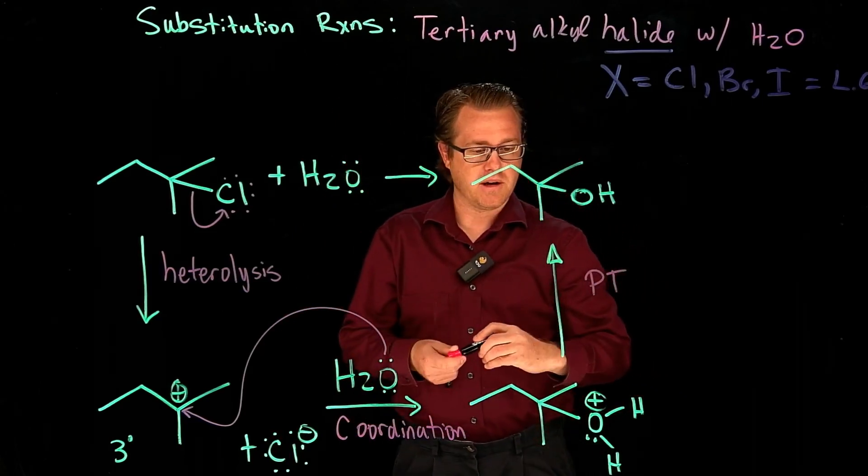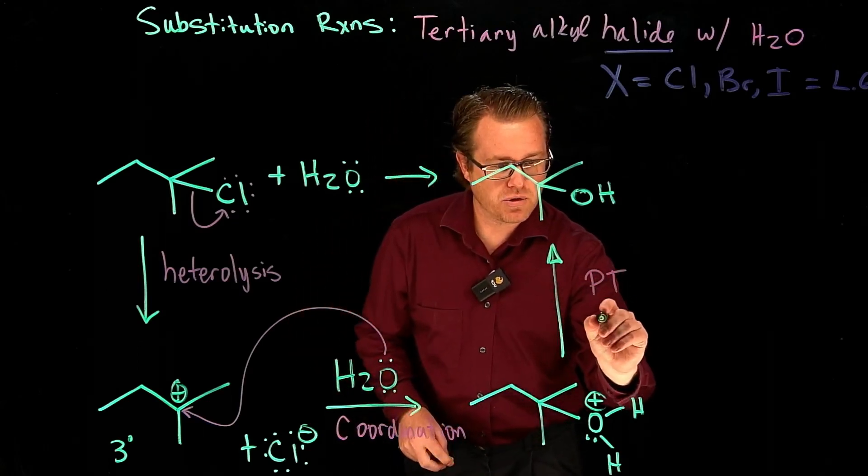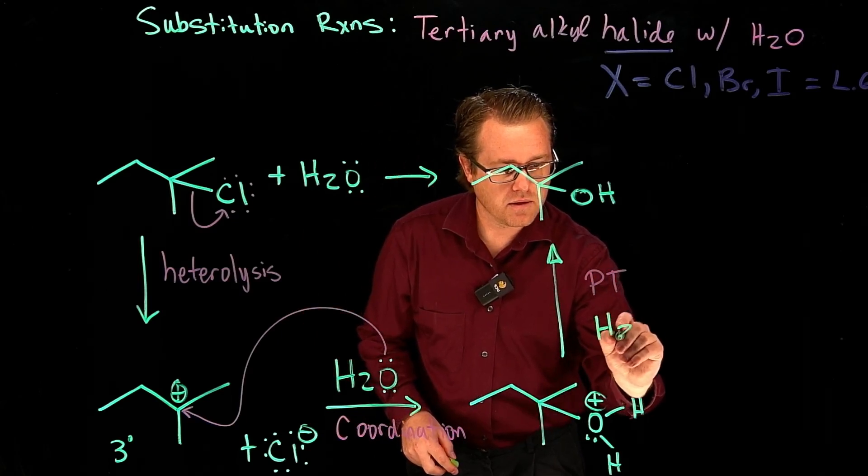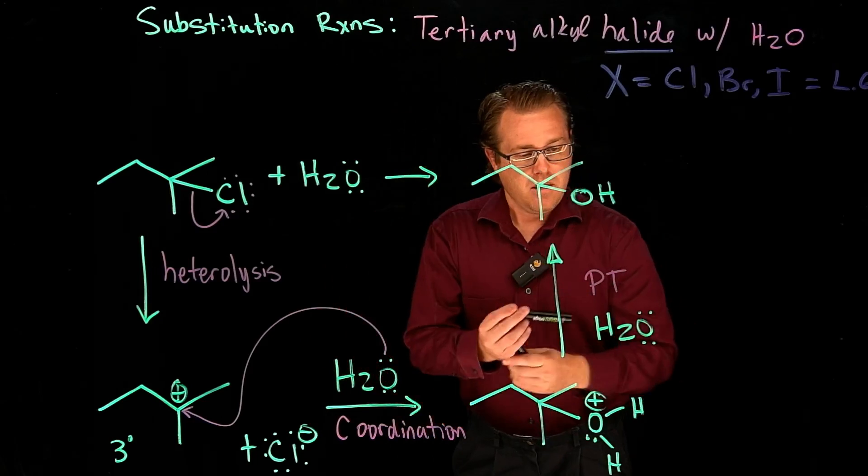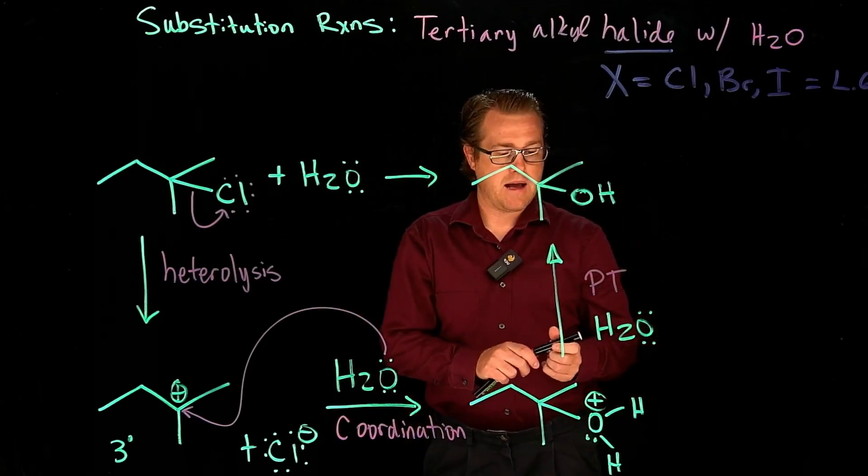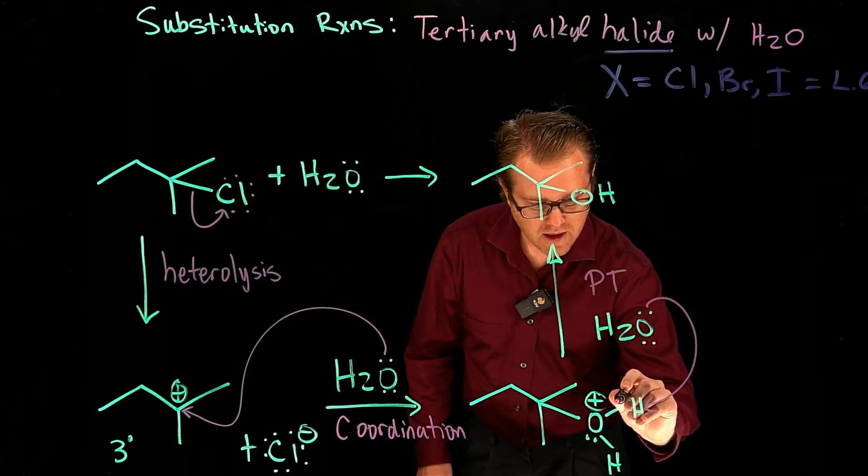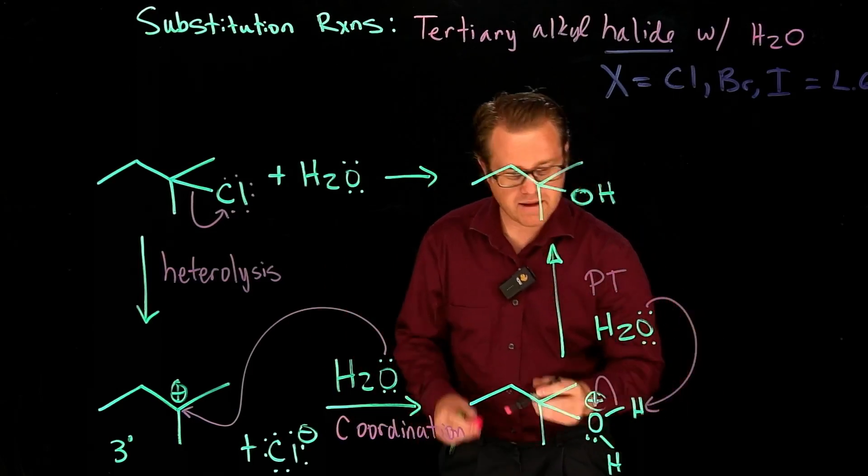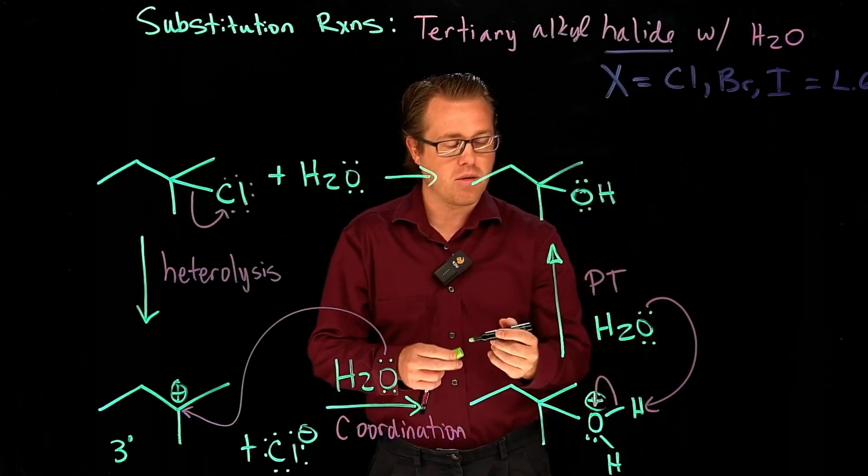And so what we can do next is a proton transfer step, PT for proton transfer. We can take and use water right here, electron-rich oxygen, electron-poor hydrogen. We can do a proton transfer and bring that and put the electron there to form our product right there.